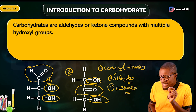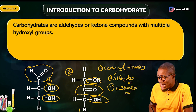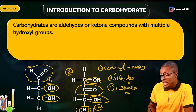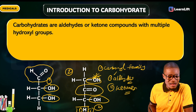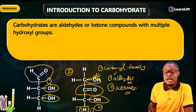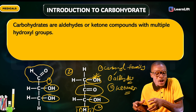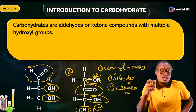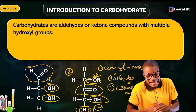Someone might ask: what if the OH is arranged such that one carbon has two OH groups and another carbon has none? No — that can never be a carbohydrate. Each carbon in the chain should have at least one OH. That is what we mean by multiple hydroxyl groups — not multiple OHs on one single carbon.